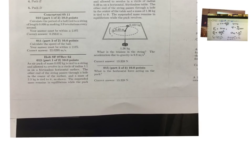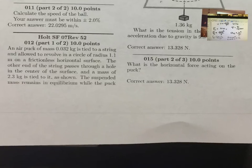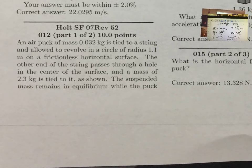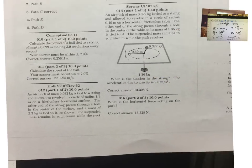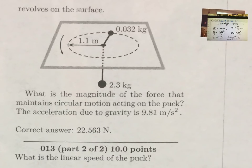So let's look at number 12. Air puck, the radius is 1.1, passes through a hole center the surface. There's a 2.3 kilogram going downward and it's suspended. So that looks like this picture right here. What is the magnitude of force that maintain circular motion acting on the puck?